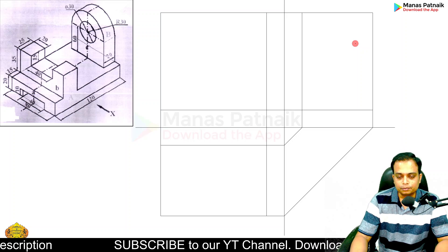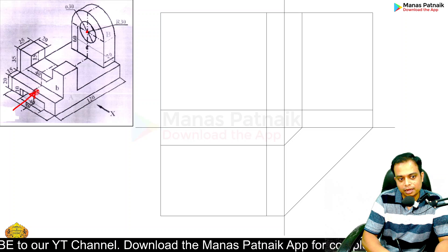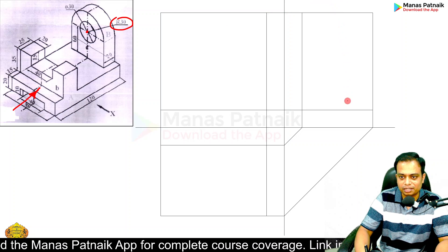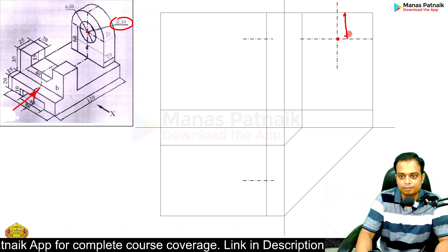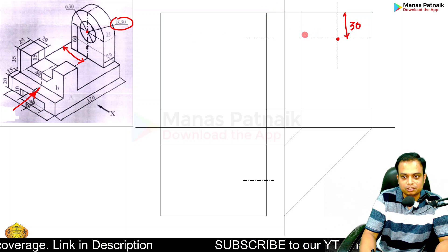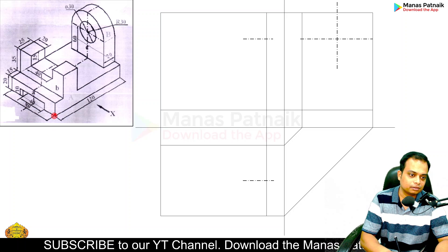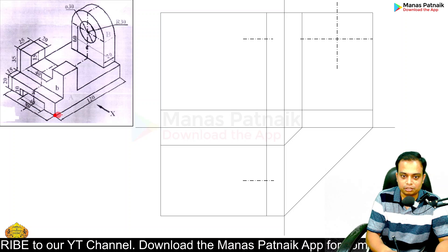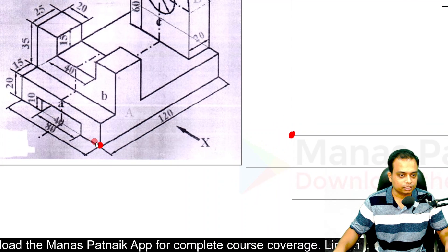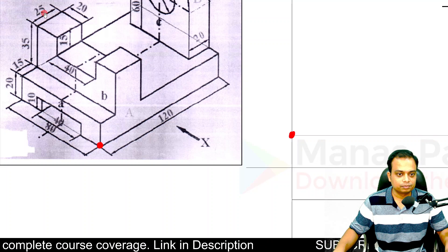Let me first mark the center. From the top view, looking from the left-hand side, it is 30 mm below — radius is 30 — so right at the center line, 30 mm below, you can mark this center. The distance from the extreme left is half of 80, which is 40. Using this information, locate this center. In the orthographic representation, this point is 20 above, then 15, so 35 above 25. Just do this.